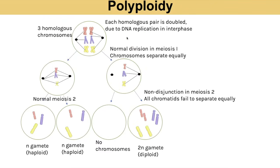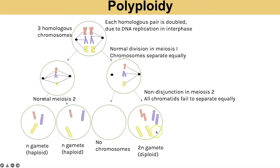Polyploidy could also happen with non-disjunction in meiosis 2. In this example, the chromosomes in meiosis 1 separated equally, but there was non-disjunction in meiosis 2 for one cell — spindle fibres didn't form on one side, so chromatids aren't separated equally and are all pulled to one cell. Again we end up with a 2N (diploid) gamete, and the other gamete has no chromosomes.